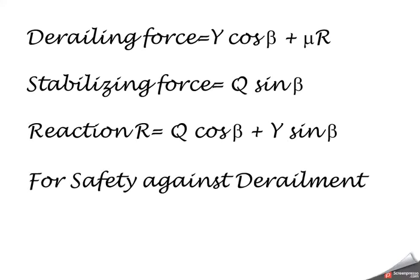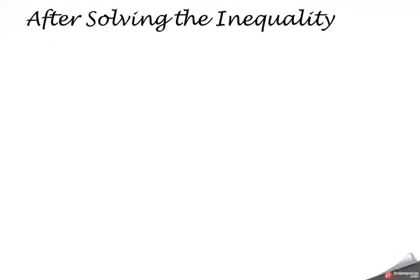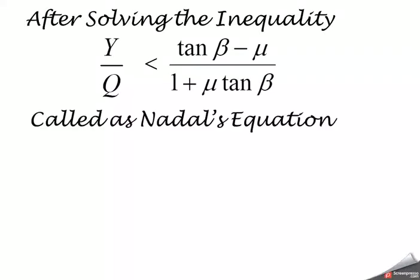For safety against derailment, derailing force must be less than the stabilizing force. After solving this inequality, Y by Q should be less than tan beta minus mu divided by 1 plus mu tan beta. This is called Nadal's equation.